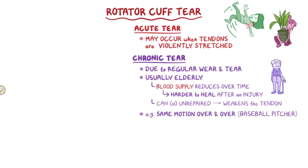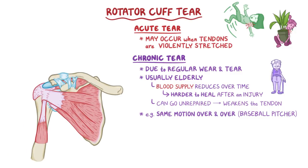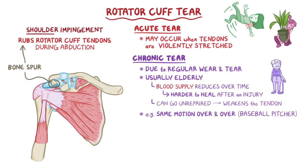Chronic tears can also occur where the bones overgrow — specifically where there may be a bone spur coming off of the acromion that rubs the rotator cuff tendons during shoulder abduction. This condition is called shoulder impingement.